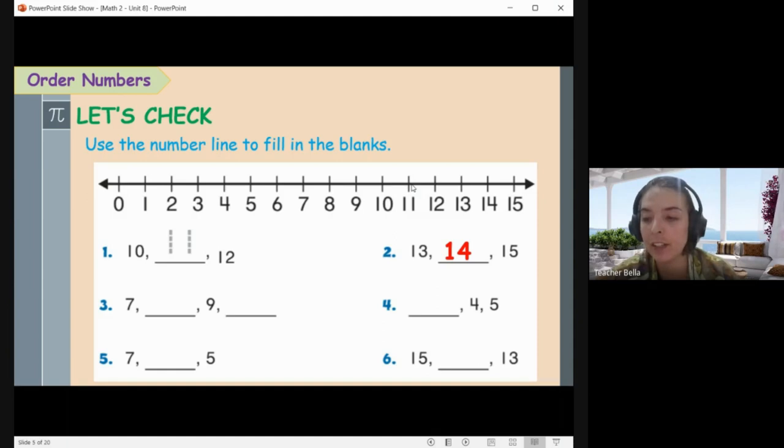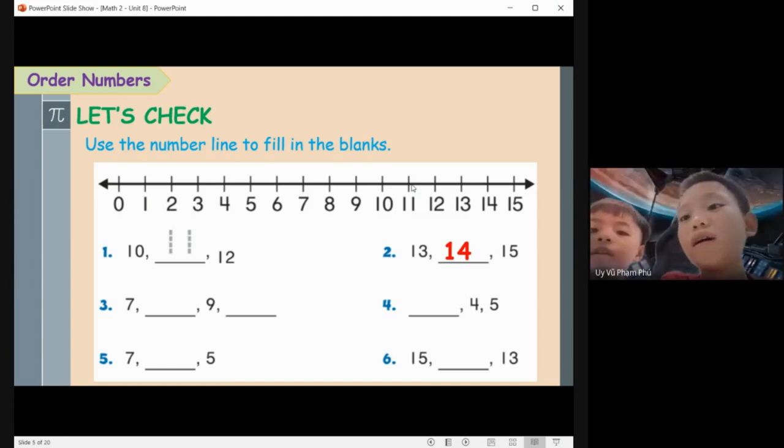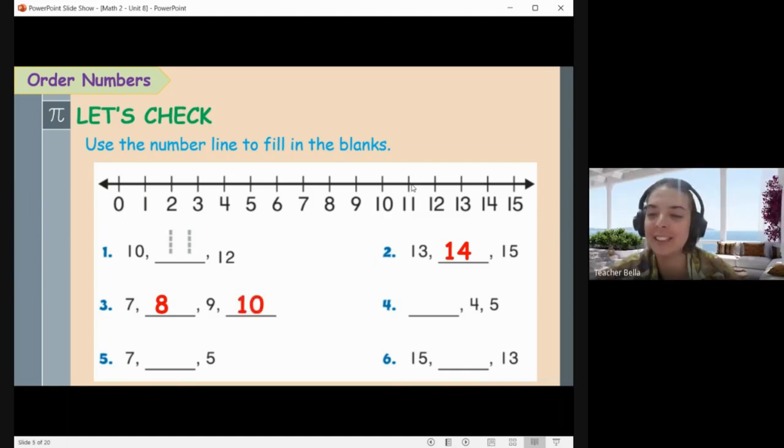Okay, and number three. Ken, can you help me with number three? Seven, eight, nine, and then ten. Yes, very good job, well done. Seven, eight, nine, and ten. So eight is between seven and nine, and ten comes after nine. Very, very good.